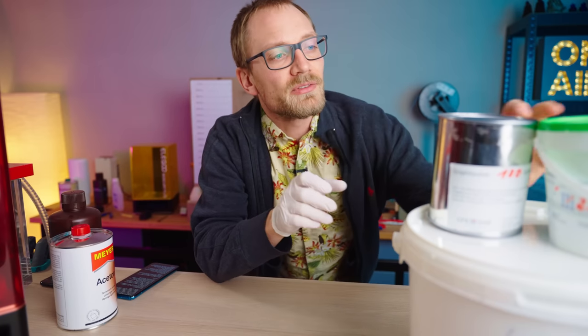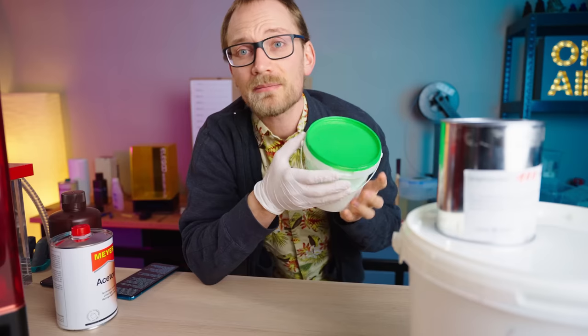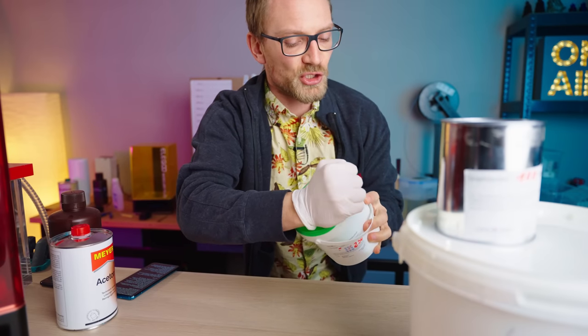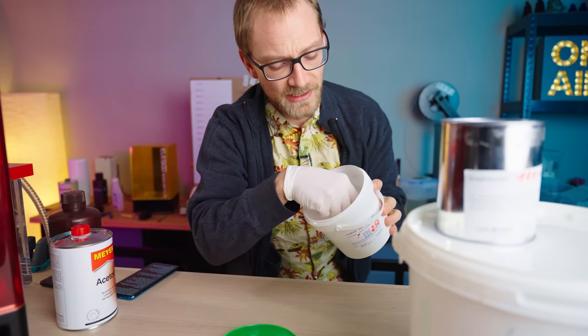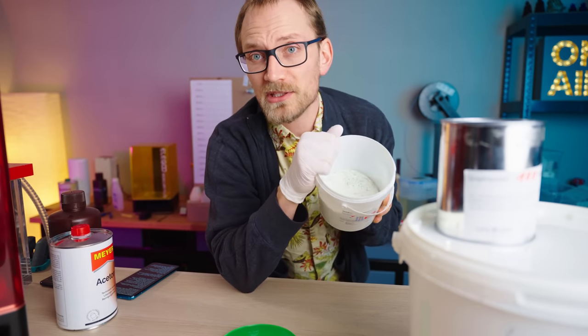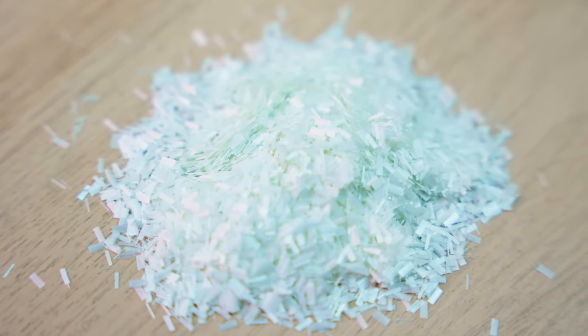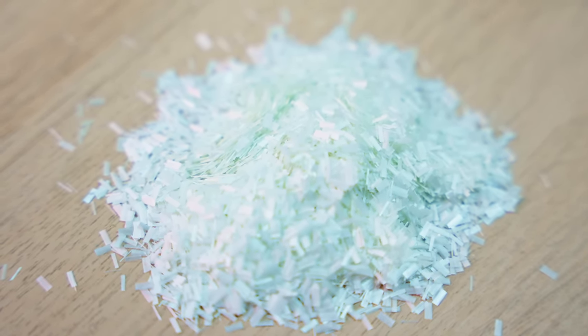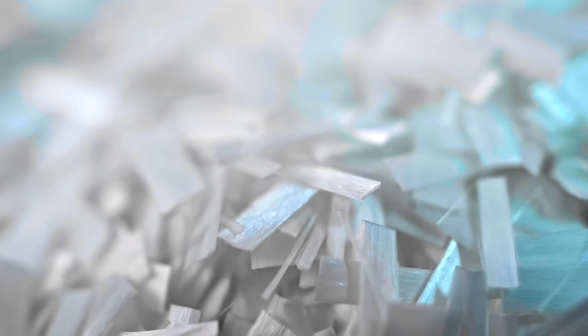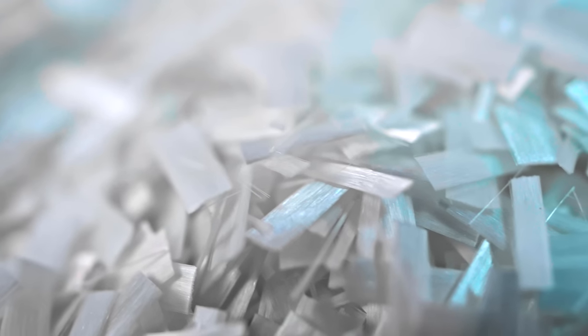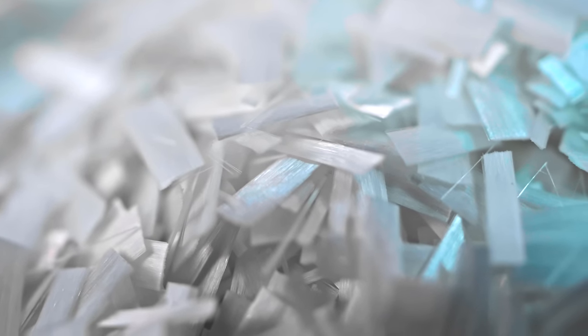We're gonna try three different additives today. The first one is maybe the most obvious one, which is chopped glass fiber. So this is 3mm long chopped strands, and the idea is this is gonna get distributed randomly throughout the material so that it randomly and evenly reinforces your base material, your resin in this case.